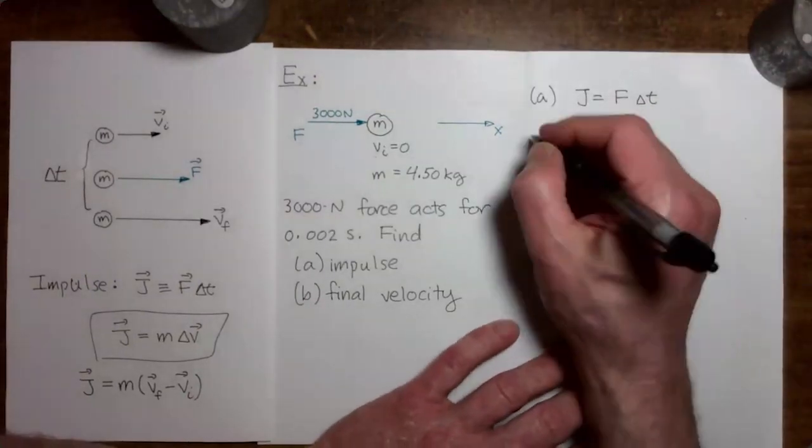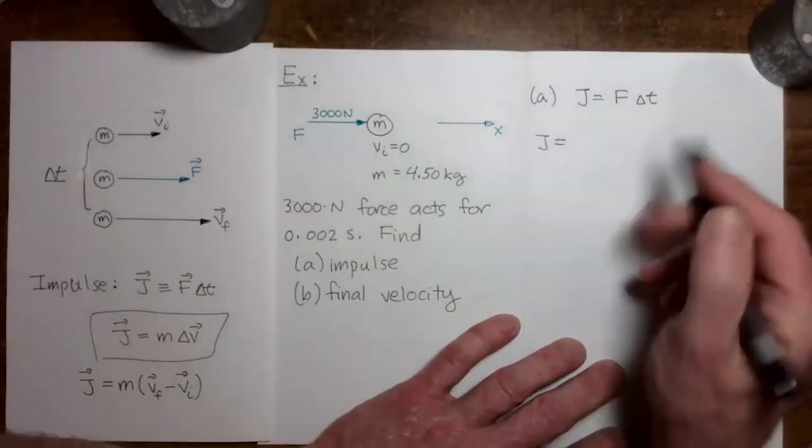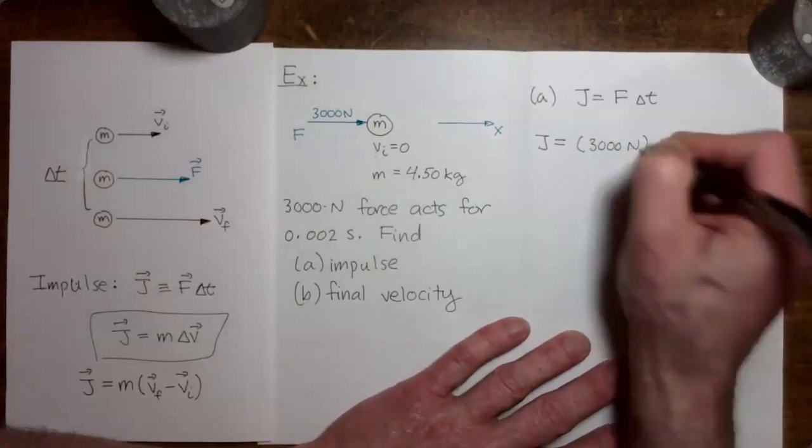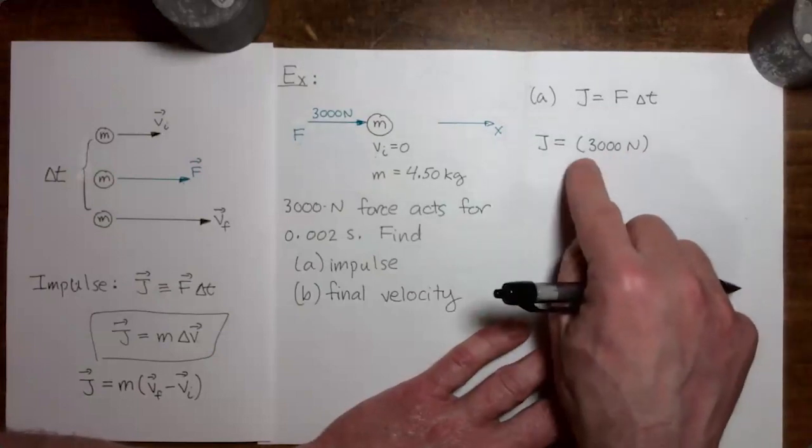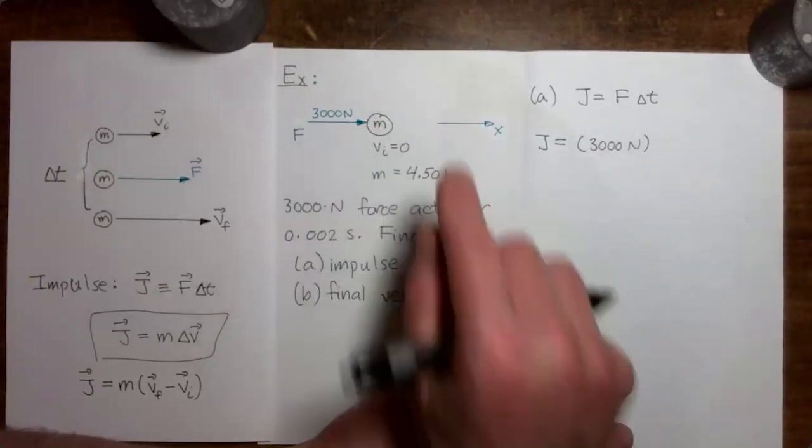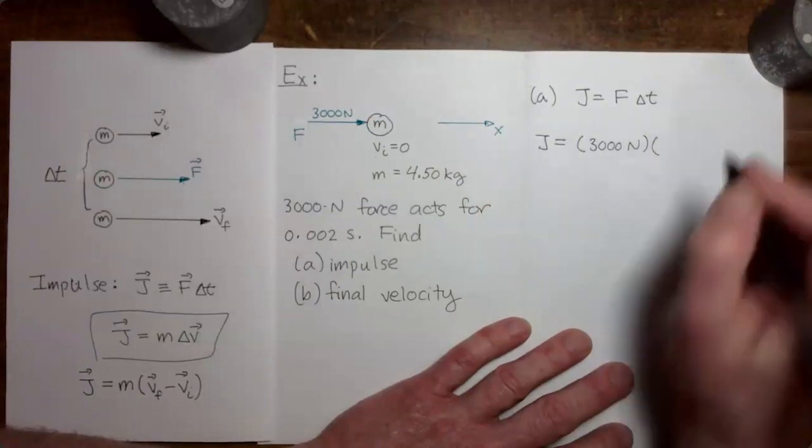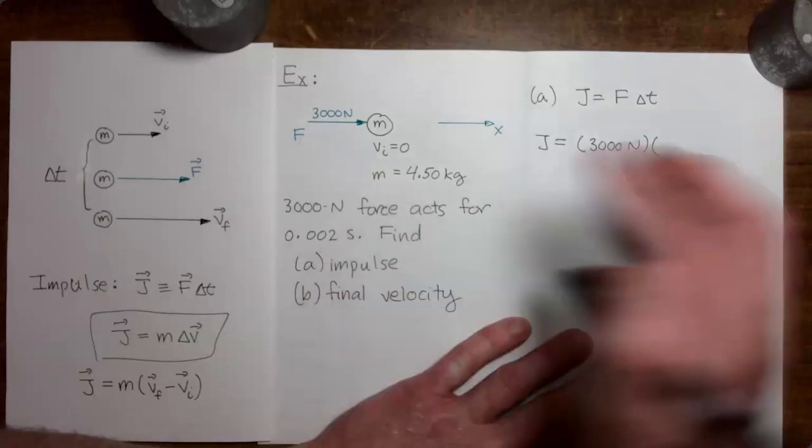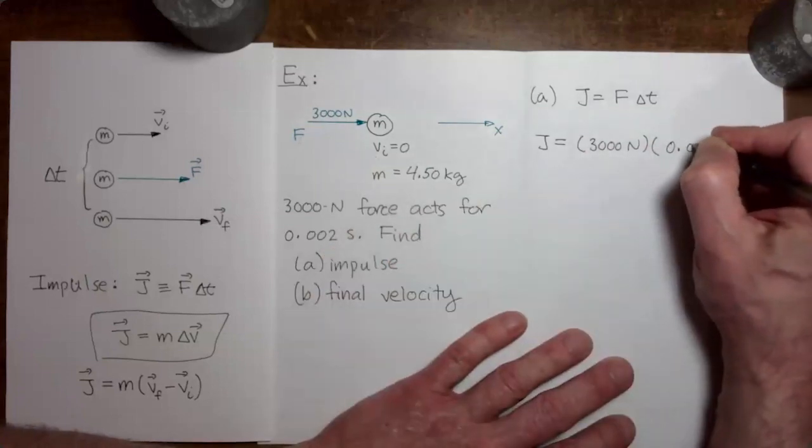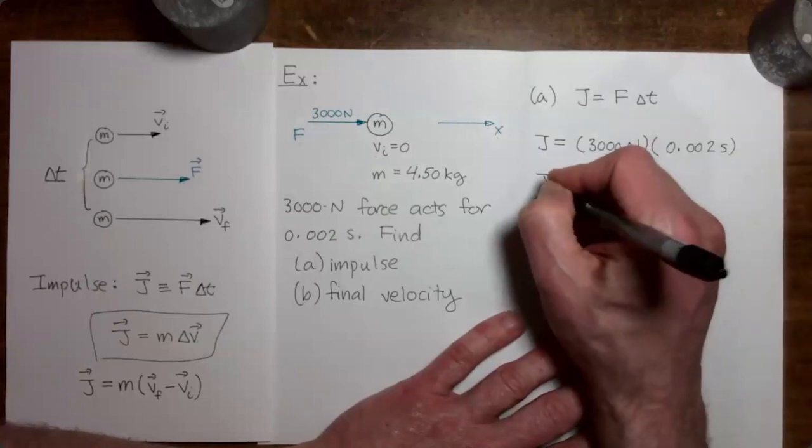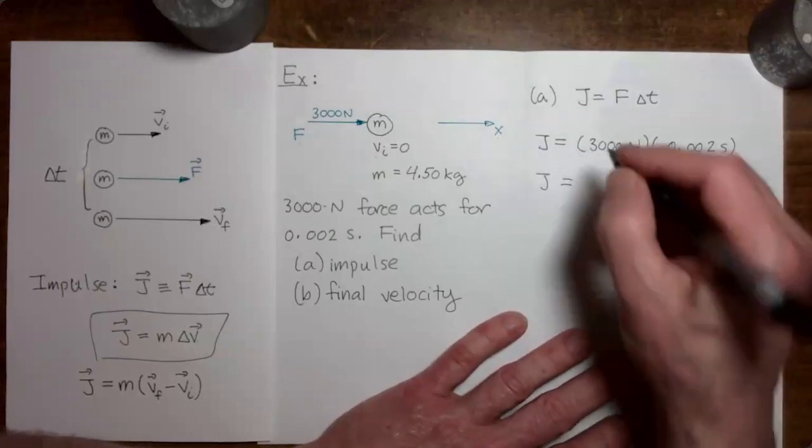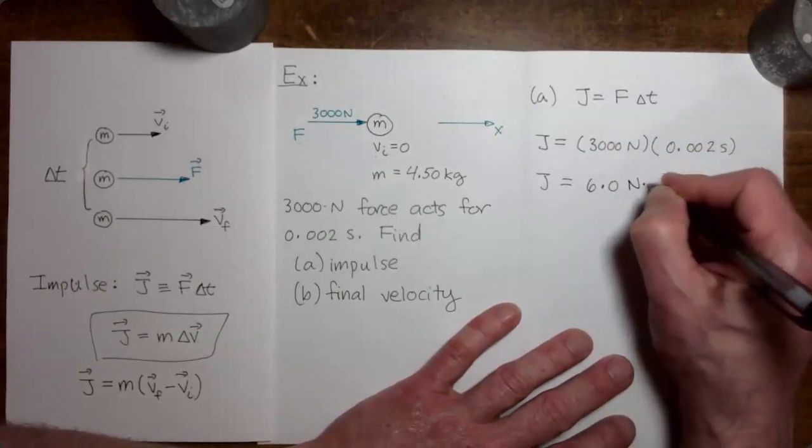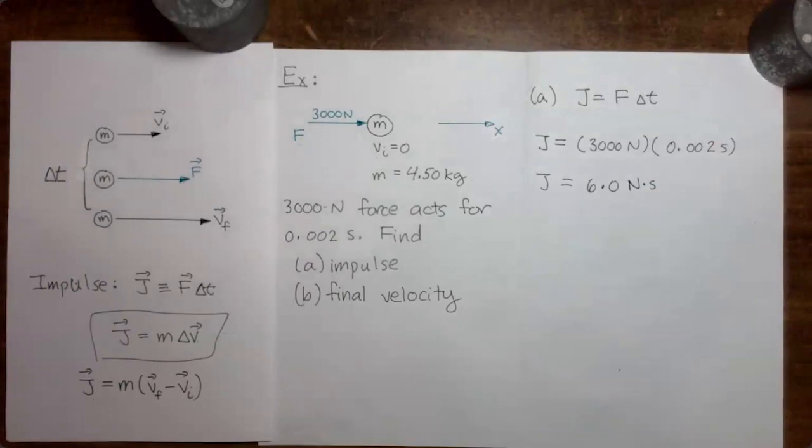So let's go ahead now and make the numerical substitution. The force is equal to 3000 newtons. And I'm taking that to be plus 3000 newtons because the force is acting in the plus x direction. I then multiply that by the time interval for which the force acts, 0.002 seconds. And multiplying those together I get 6.0 and then the unit is newton seconds. And we just leave that as newton seconds.